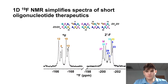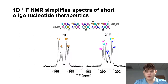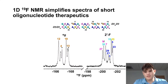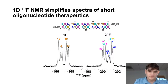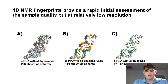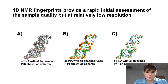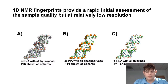The last 1D measurement I'll show is the fluorine spectrum. These are probably the most simplified spectra, due to the fewer number of fluorines than phosphorus or hydrogen. Both the 5-fluoros and the 2'-fluoros resonate in distinct chemical shift regions, and we're able to assign these. Despite their fewer number, due to their distribution throughout the oligonucleotide, they capture a lot of structural information. In conclusion, the 1D NMR fingerprints provide a rapid initial assessment of sample quality. These experiments can be acquired in about 30 seconds for proton, and the phosphorus and fluorine measurements can be completed in about five minutes.